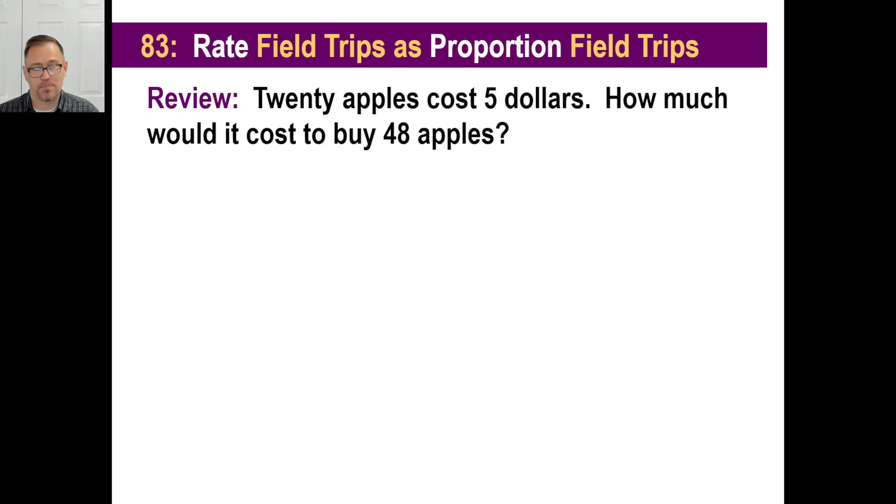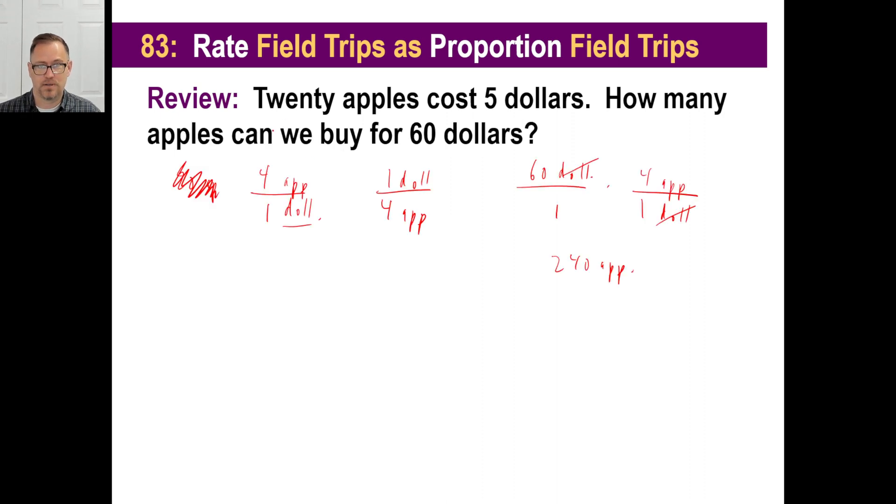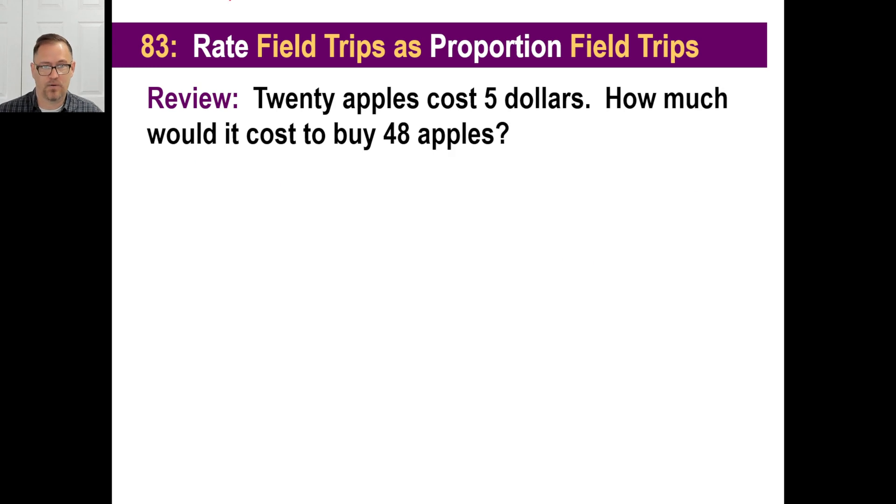Now, another variation of the same problem would be twenty apples cost five dollars. How much would it cost to buy forty-eight apples? Instead of asking how much for sixty dollars, you're saying, how much would it cost to buy forty-eight apples? Well again, don't forget. Our ratio is four apples to one dollar, or we can write one dollar for four apples. And they say, how much would it cost to buy forty-eight apples? Don't think. Just write forty-eight apples. And then you're going to choose this one. At one dollar, that'll be four apples. Apples go away. Forty-eight times one is on top. One times four is on bottom. Forty-eight divided by four is twelve dollars. And that is your answer.